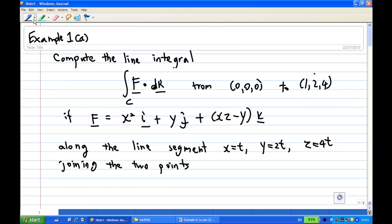And the contour in this case, C, is actually the path, the line segment joining (0,0,0) to (1,2,4), and the parametric equation is x equal to t, y equal to 2t, z equal to 4t.